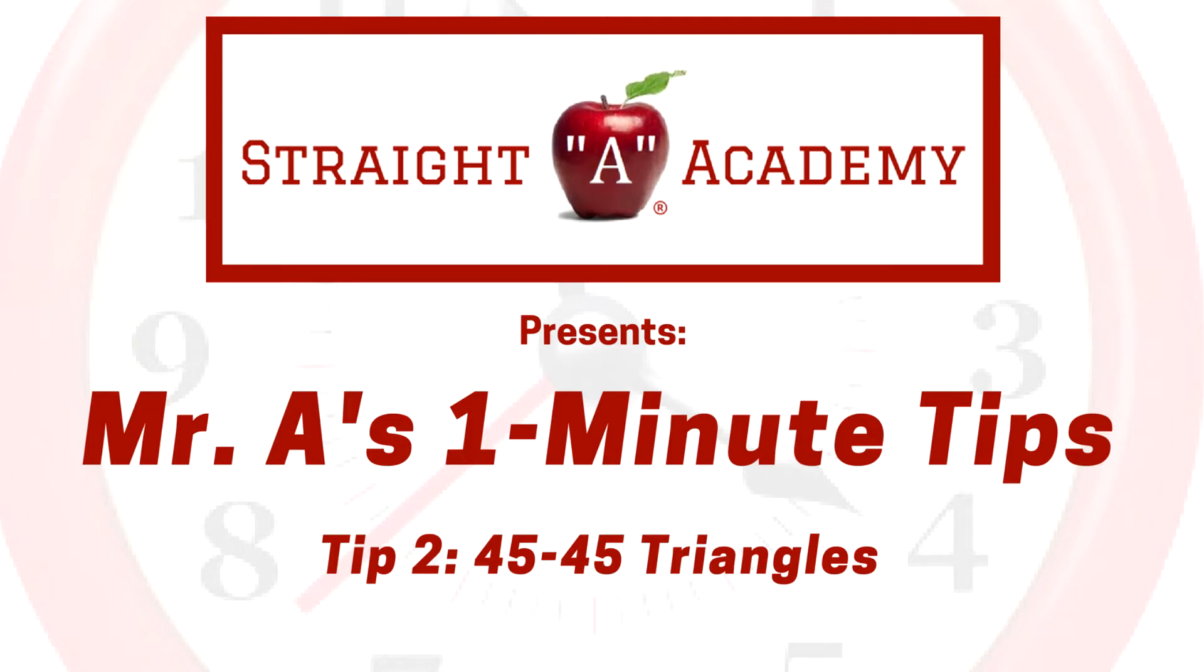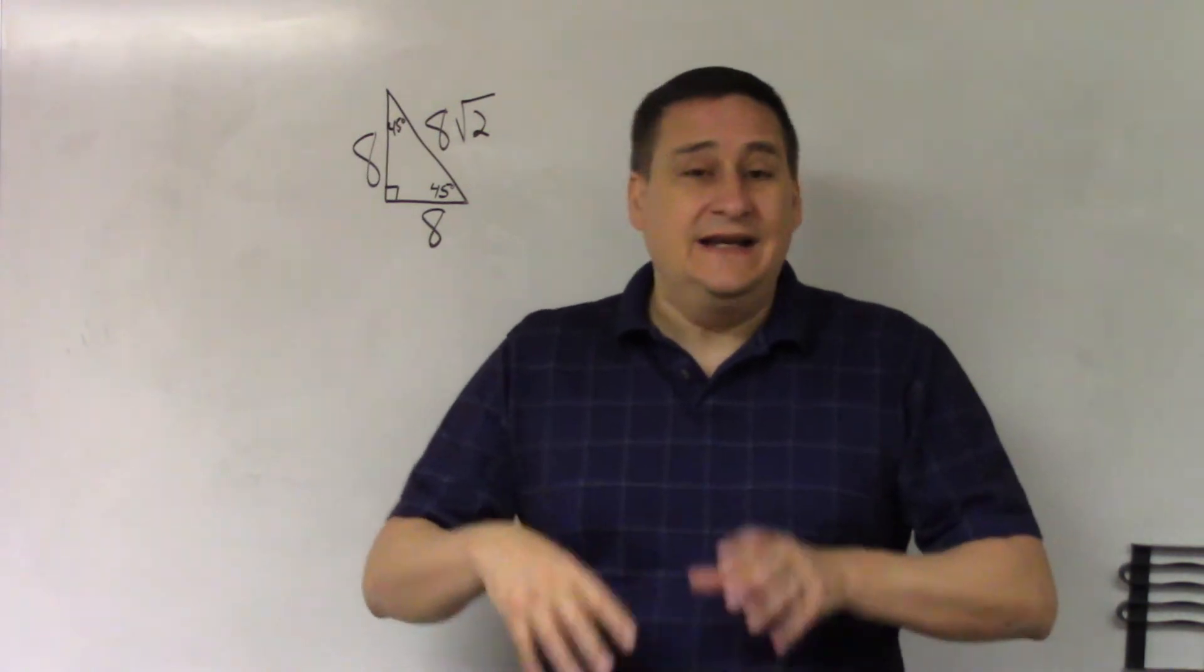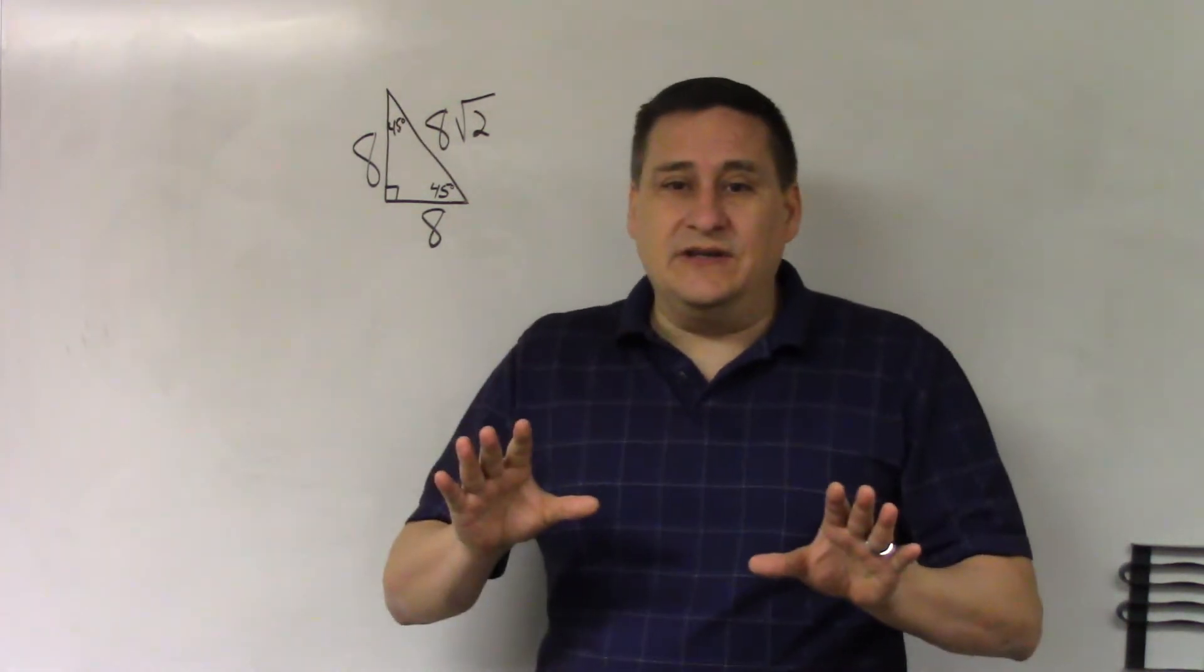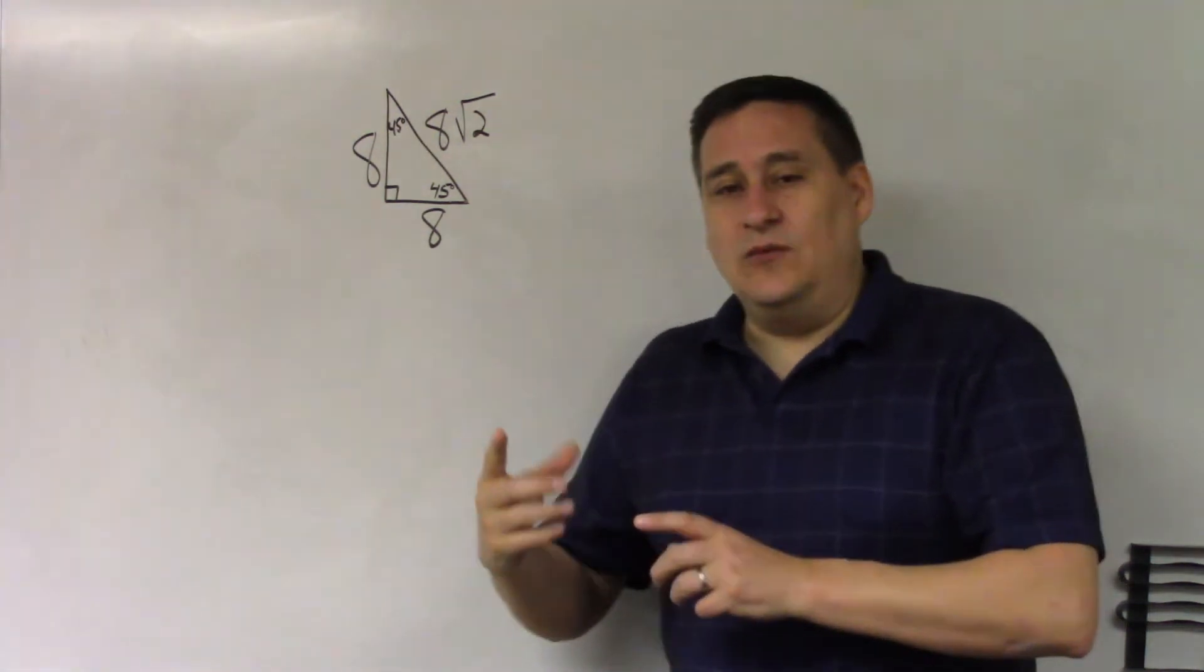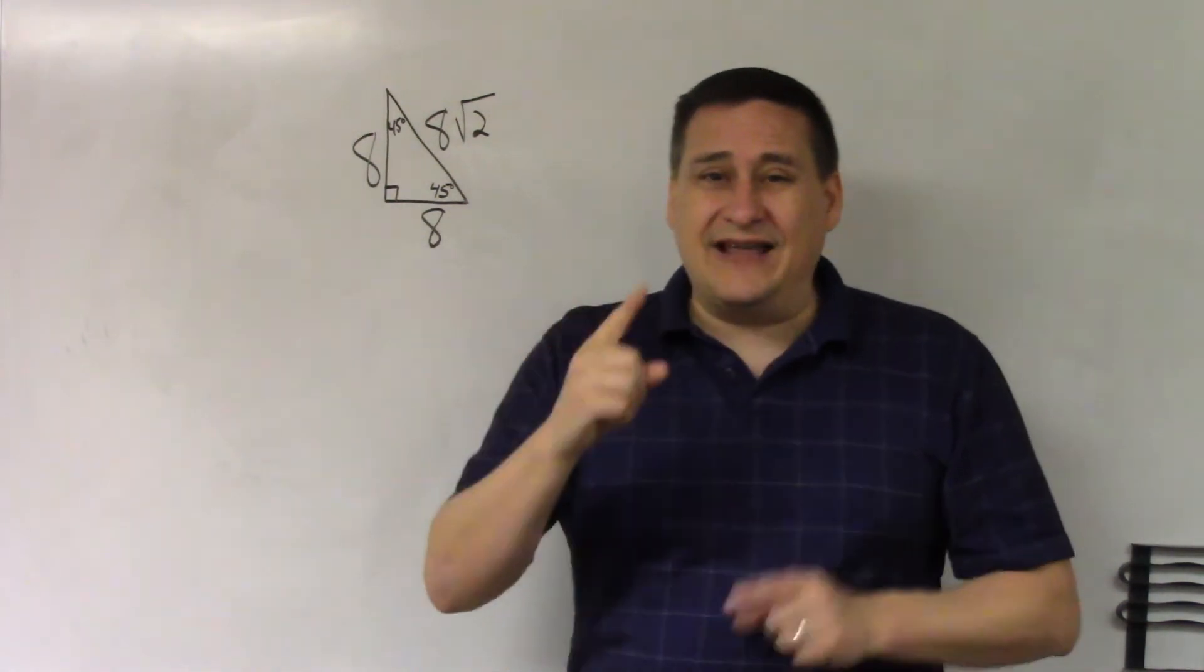The 45-45-90 triangle, also known as the isosceles right triangle, is a special triangle that both SAT and ACT love to use. The ACT will not give you this triangle at all, whereas the SAT will put it on the front page of every math section. Either way, though, you have to have it memorized.